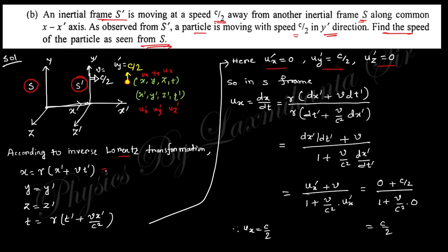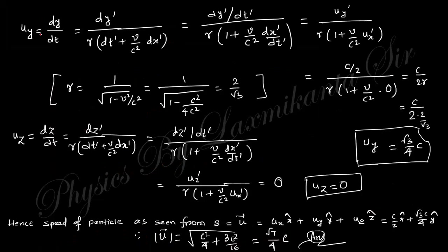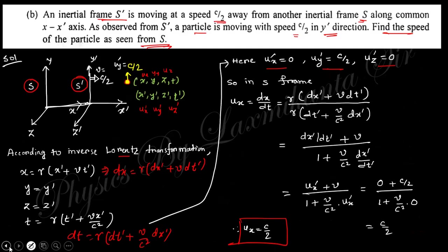We calculate: dx = gamma(dx' + v*dt') and dt = gamma(dt' + v/c² * dx'). Dividing by dt' and using dx'/dt' = u_x', we obtain u_x = v = c/2. Similarly, u_y is calculated by the same process and yields u_y = (√3/4)c. Since dz'/dt' = u_z' = 0, u_z = 0. The magnitude of the total velocity is √7 * c/4.